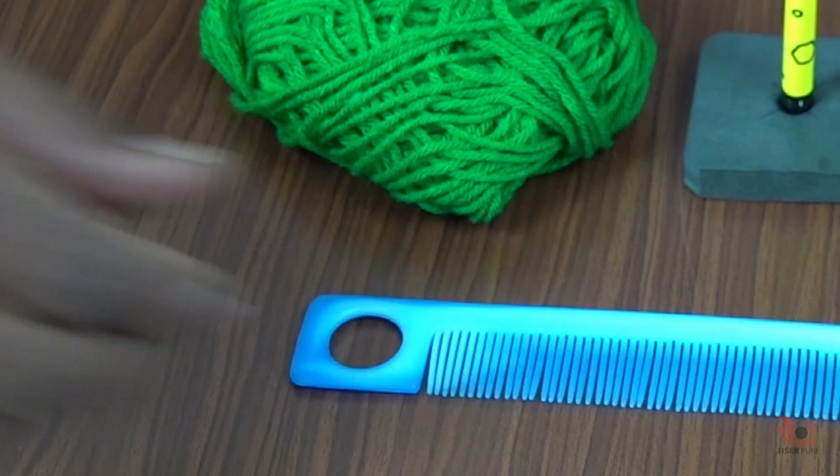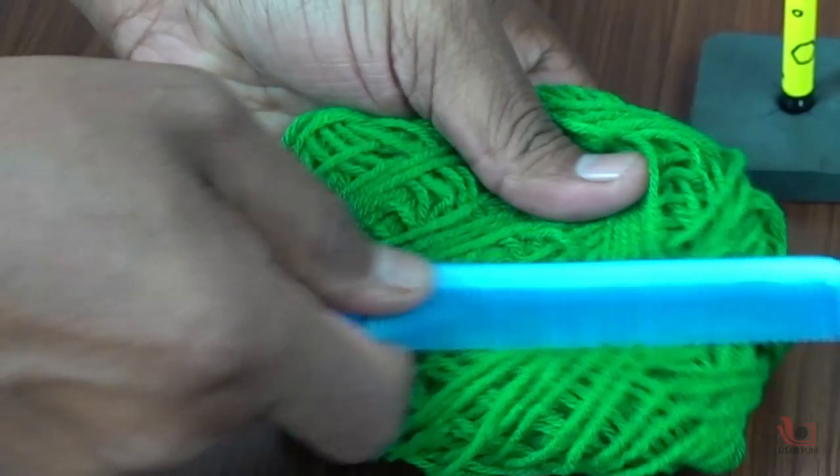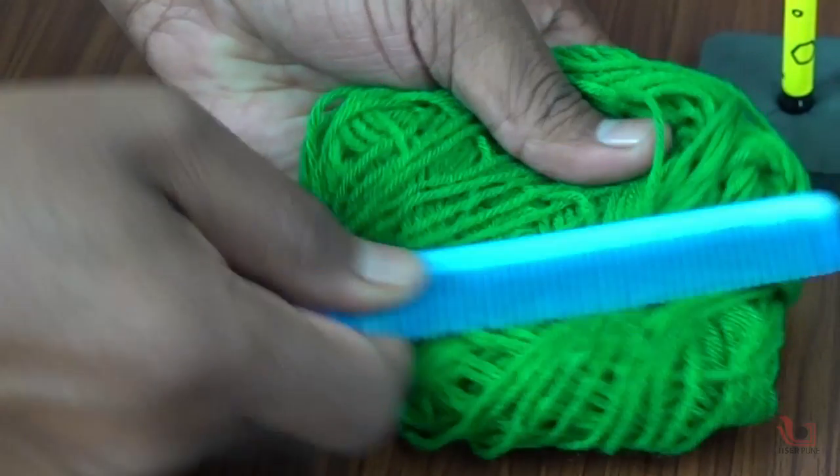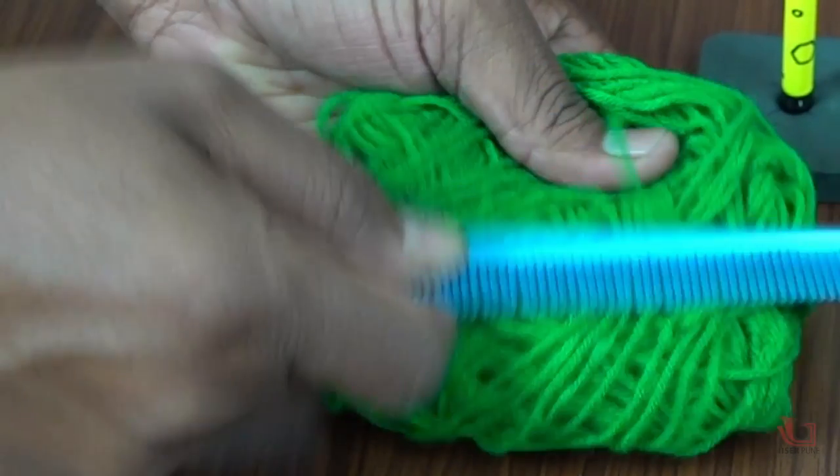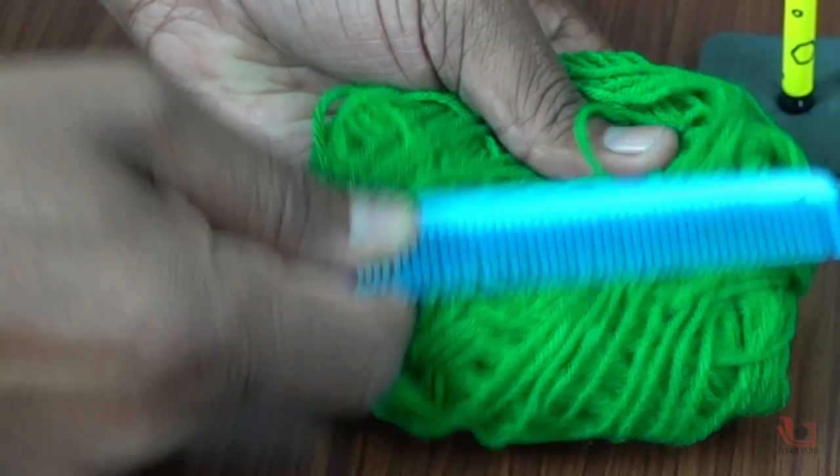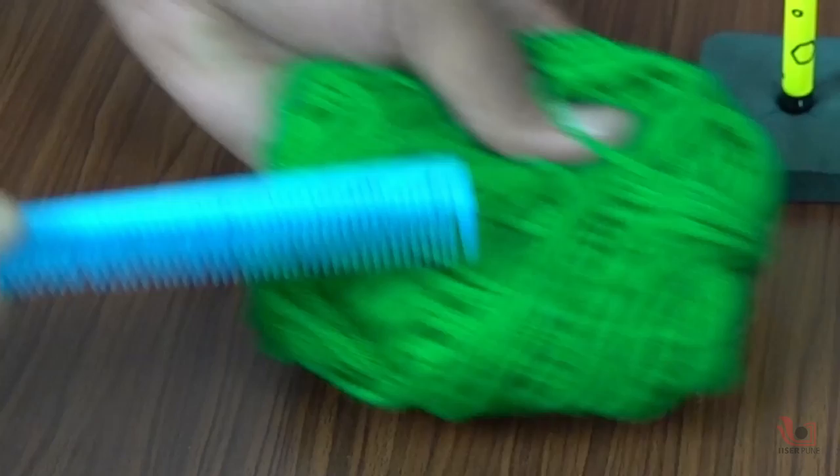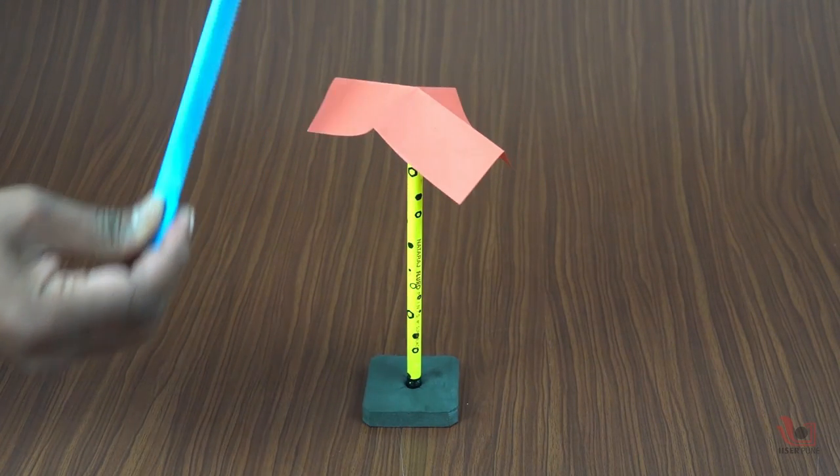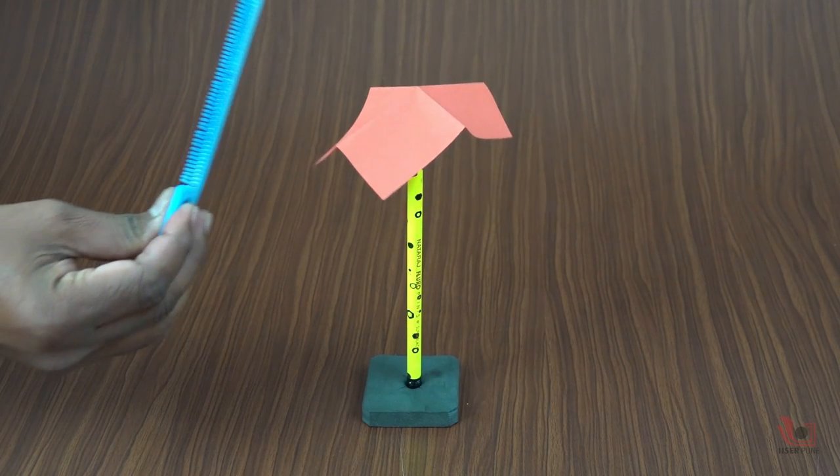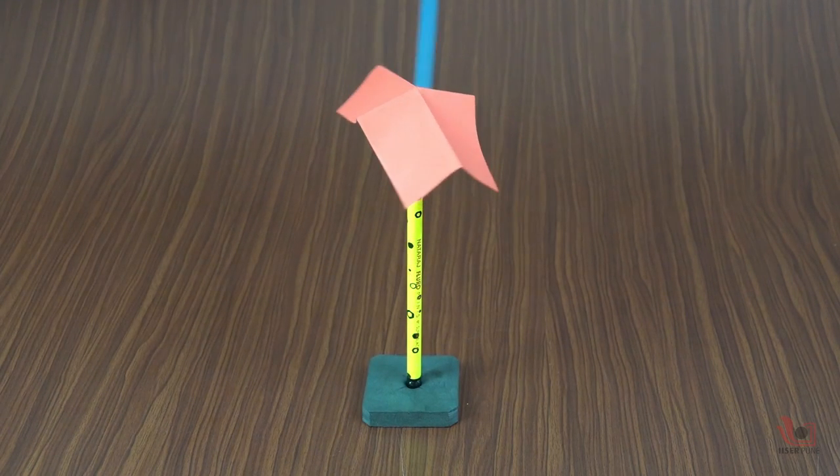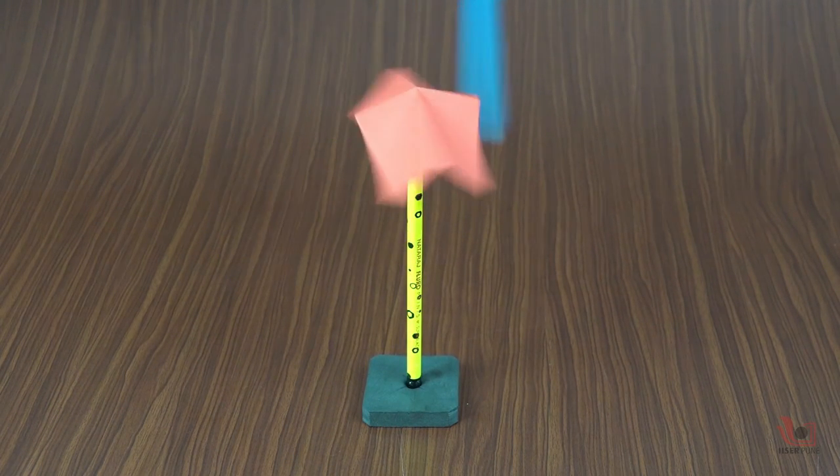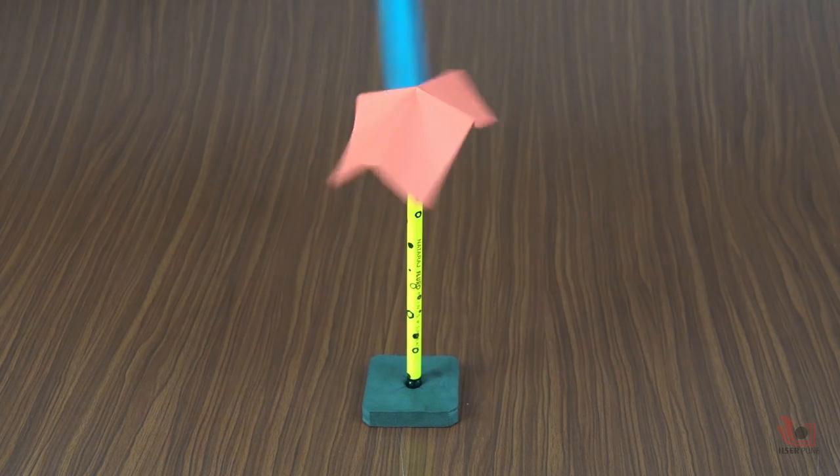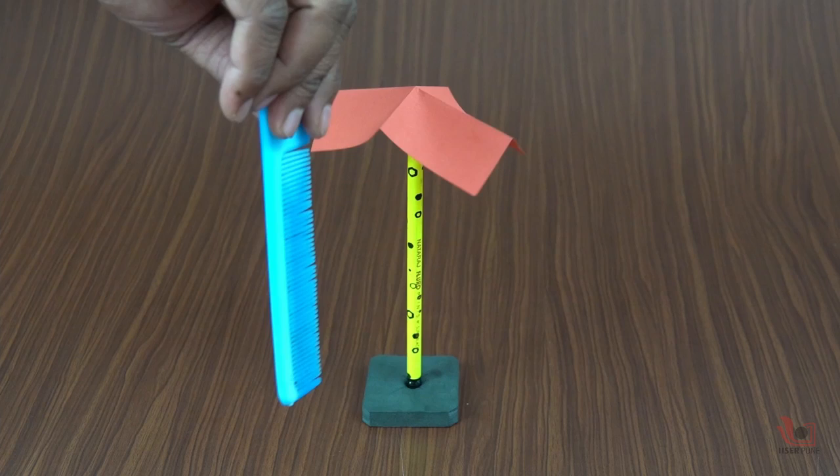When we rub a comb over wool, the comb picks up electrons from wool and hence the comb gets negatively charged, while the wool gets positively charged. When we bring the charged comb near the paper, the paper is attracted to the comb. Why? The negative charges on the comb repel the electrons in the paper further away, leaving the paper's positive charges closer. The paper is then attracted towards the comb.